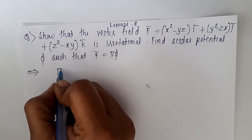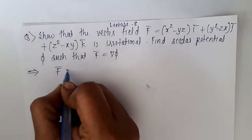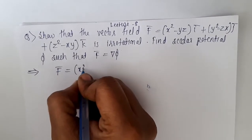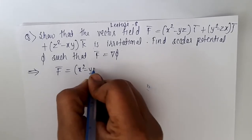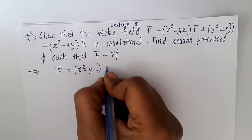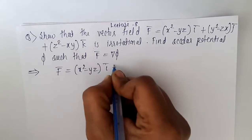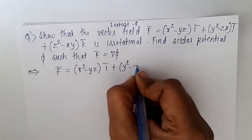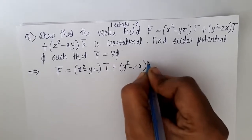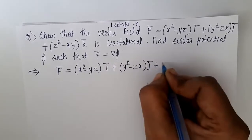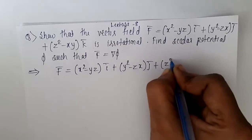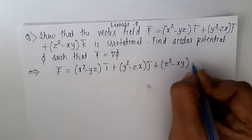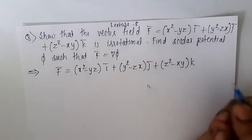f is given as (x² - yz)i + (y² - zx)j + (z² - xy)k.